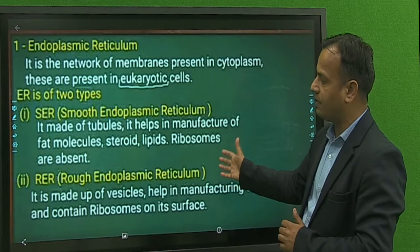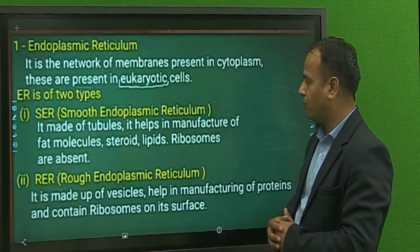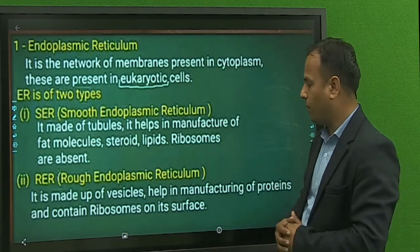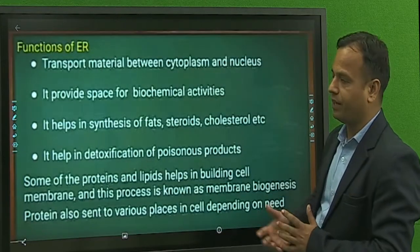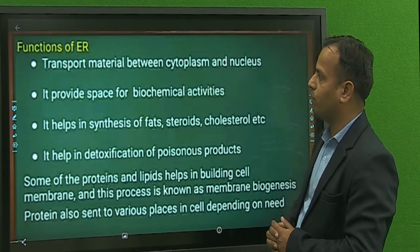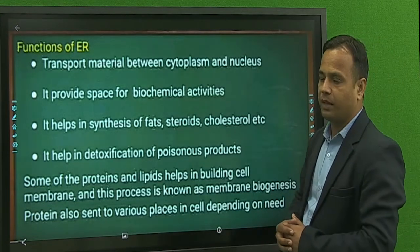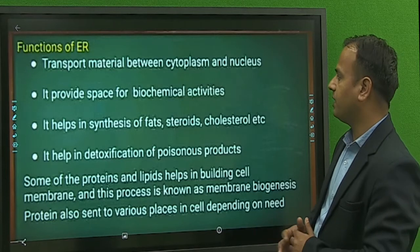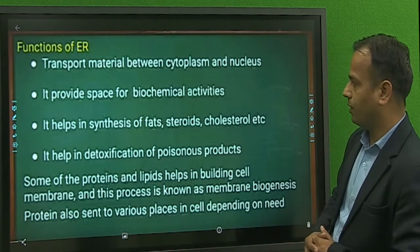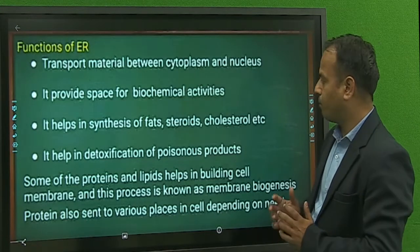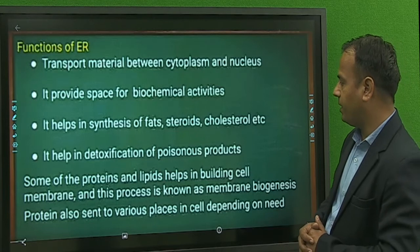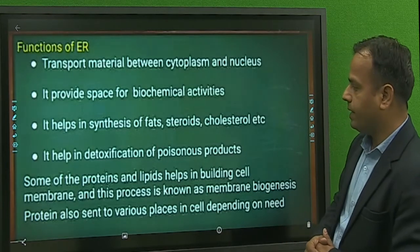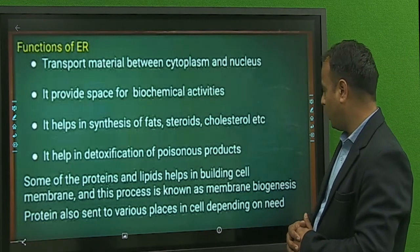The main functional difference between SER and RER: Smooth endoplasmic reticulum makes lipids and ribosomes are absent. Rough endoplasmic reticulum is involved in manufacturing of proteins and has ribosomes on its surface. The function of the endoplasmic reticulum is to transport material between the cytoplasm and the nucleus, provide space for biological activities, and help in the synthesis of proteins, steroids, and cholesterol. It also helps in detoxification of poisonous products, and some proteins and lipids help in building cell membranes through a process known as membrane biogenesis.